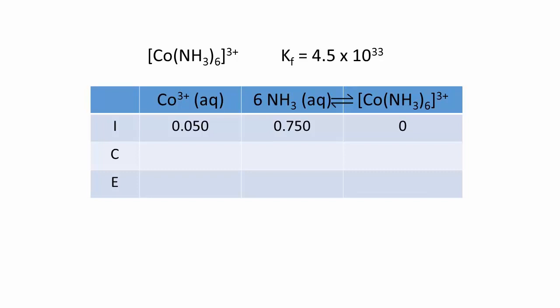For these calculations, given the huge equilibrium constant, assume the reaction goes completely to the products until all of the limiting reagent is gone. In practice, it is always the metal cation. Be sure to take into account the stoichiometry of the balanced chemical equation.